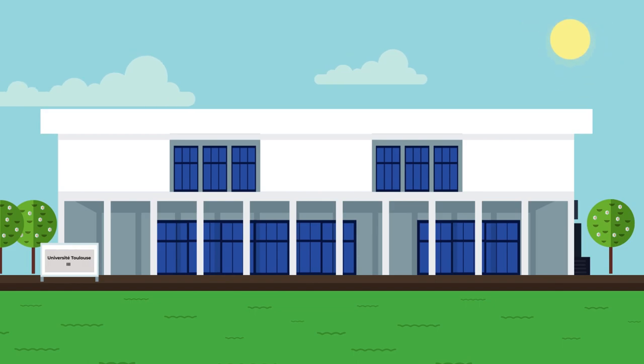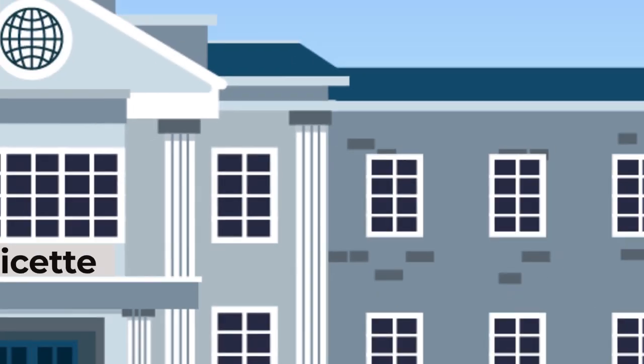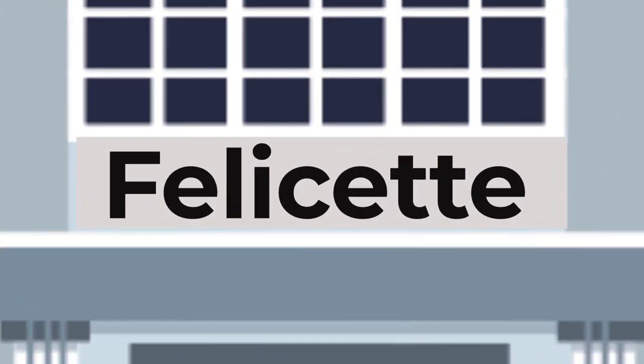The Université Toulouse 3 is also building a new observatory. Its logo will be an astronaut cat. And the observatory itself will be named Félicette.